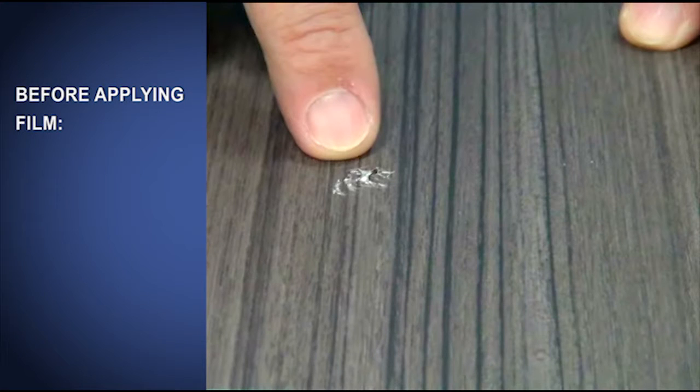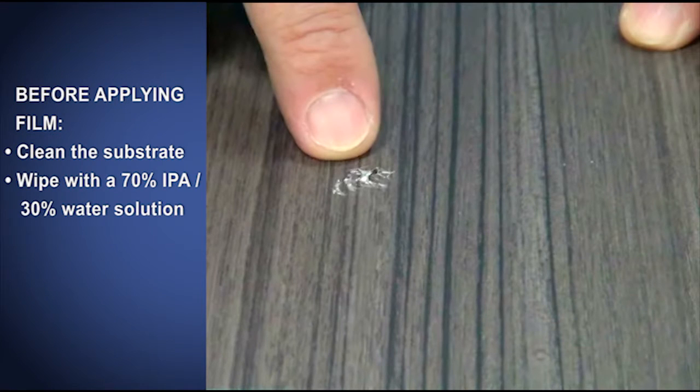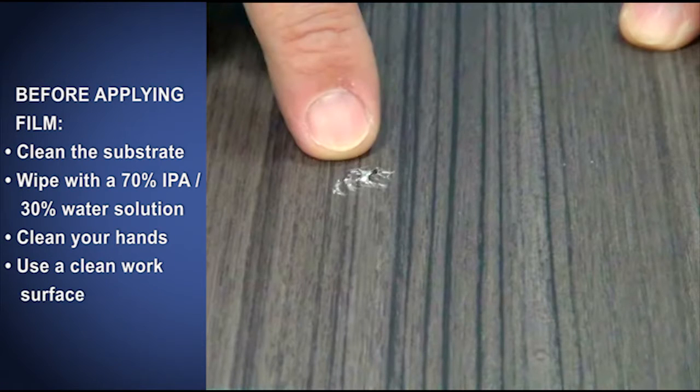Before applying film, always clean the substrate to be sure it is free of dust and contaminants. Wipe with a solution of 70% isopropyl alcohol and 30% water, and wipe dry. Be sure your hands are clean and free of dirt and lotions to avoid contaminating the adhesive. And always work on a clean surface and with clean tools.